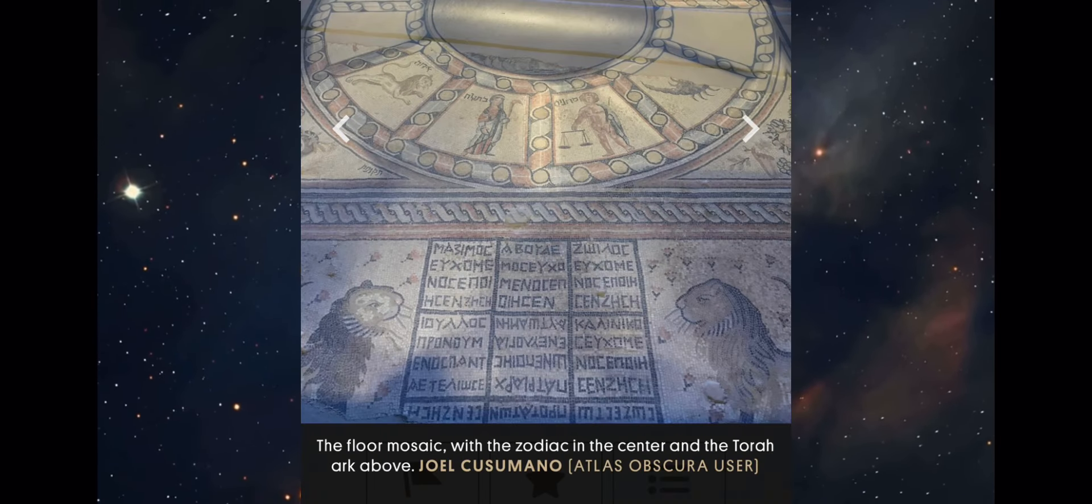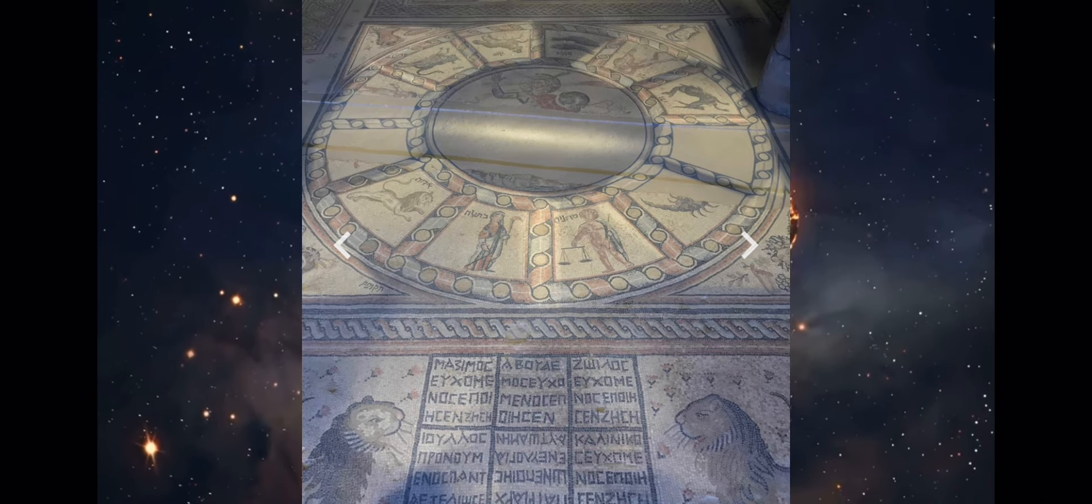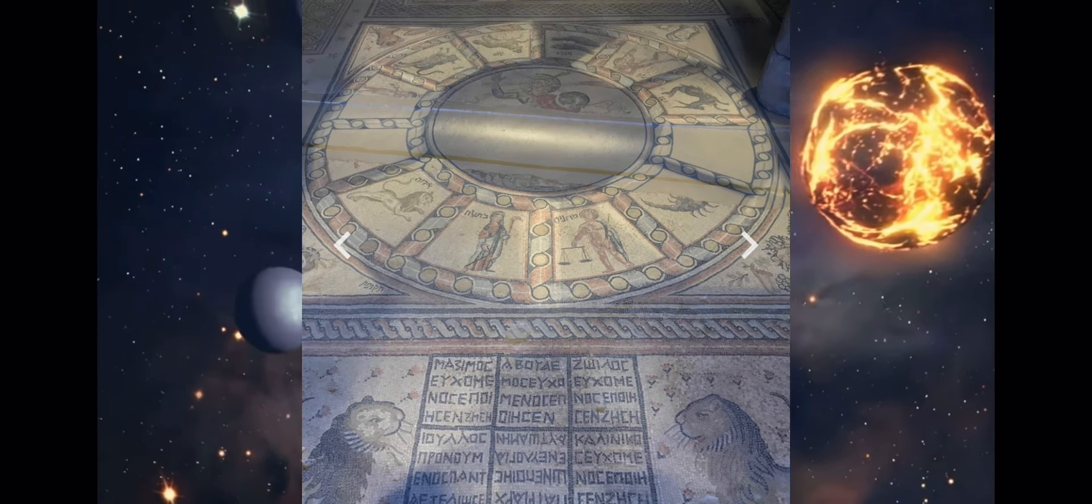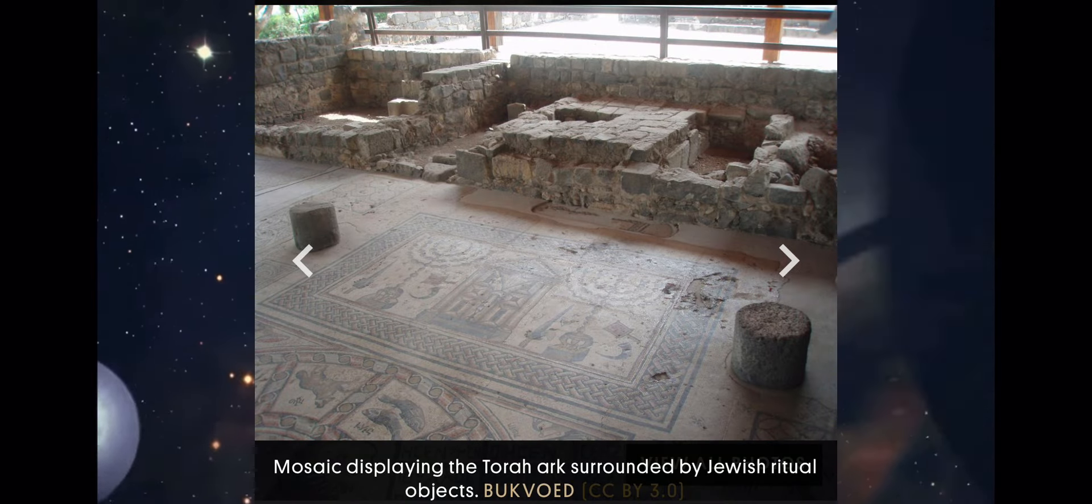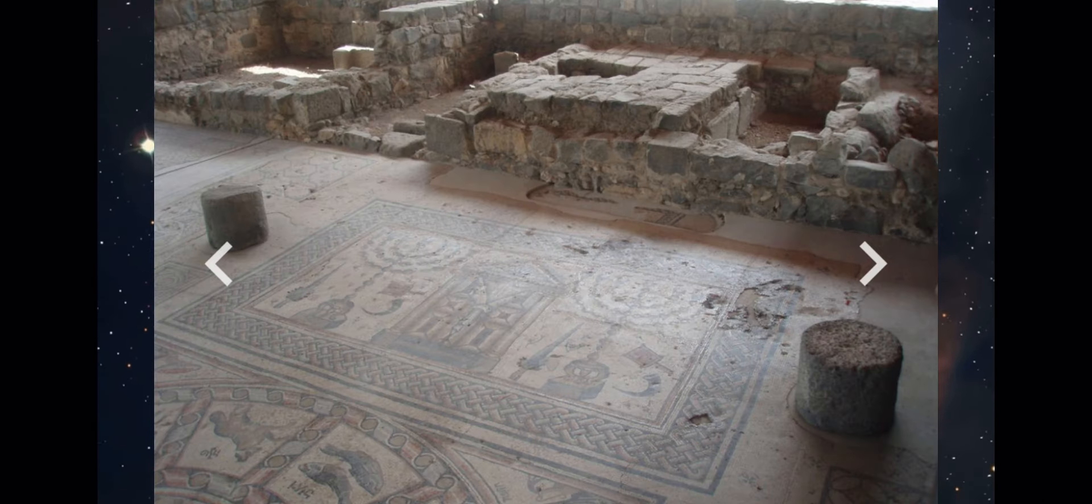There's even ancient temples, Mosaic temples, which have the Zodiac engraved in the floors of the church. And you see they have the Torah ark, the menorah, and the shofar, these engraved images above it.